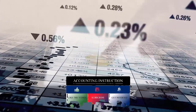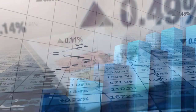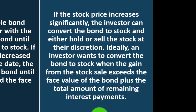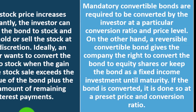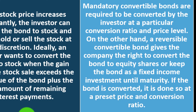After converting, you could hold the stock and generate future dividends and increases in stock price, or you could just sell the stock for the higher value. Ideally, an investor wants to convert the bond to stock with the gain from the stock sale proceeds exceeding the face value of the bond plus the total amount of remaining interest payments. Mandatory convertible bonds are required to be converted by the investor at a particular conversion ratio and price level. A reversible convertible bond gives the company the right to convert the bond to equity shares or keep the bond as a fixed income investment until maturity, done at a preset price and conversion ratio.